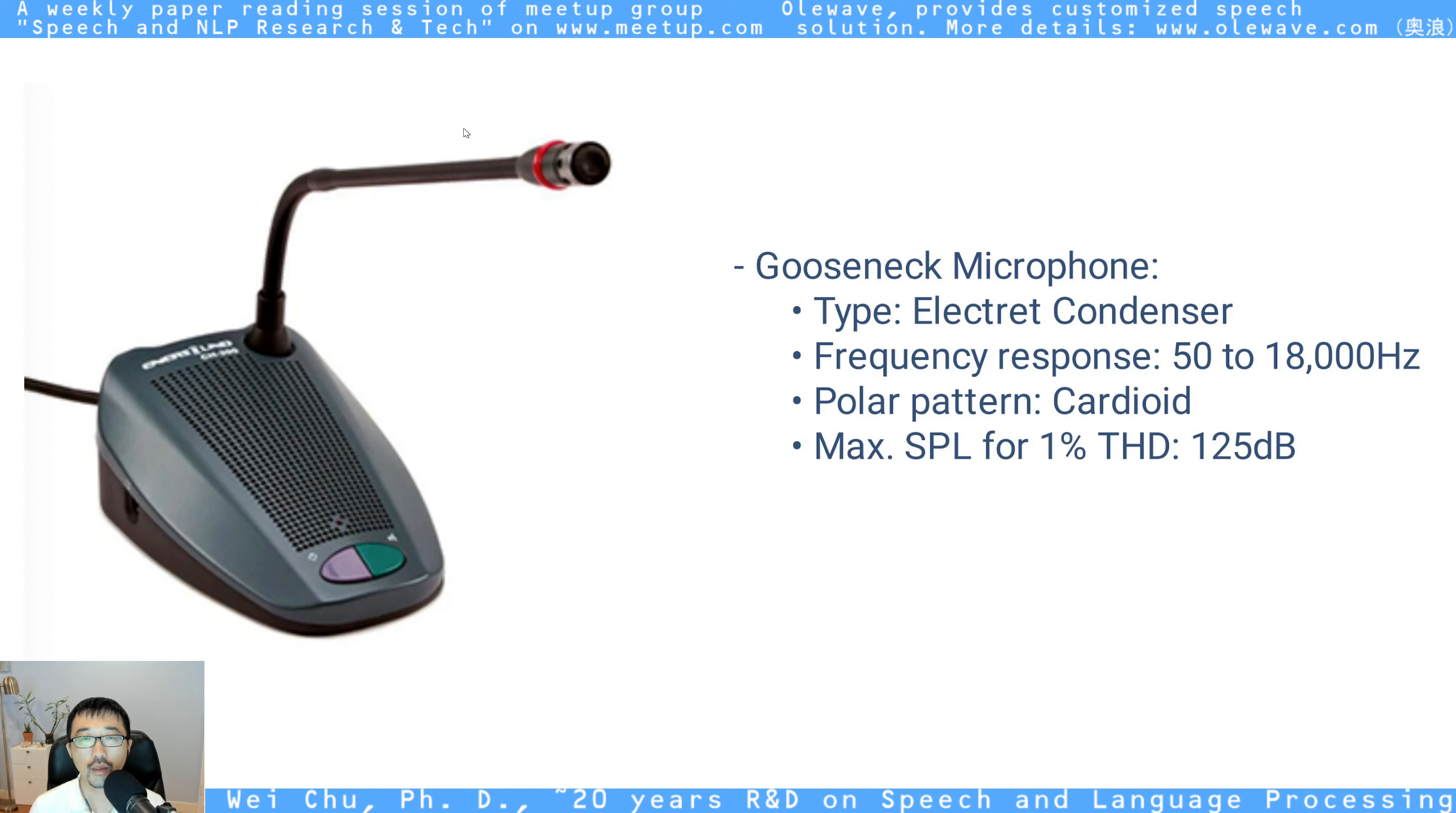And I think you have all seen that in the video, the senator and Dr. Fauci are all using this type of a gooseneck microphone. And the key thing of this microphone is the microphone right over here. Its type is called the electrolyte condenser microphone. And what is that? Let's take a look.